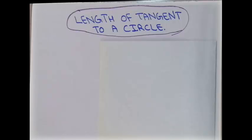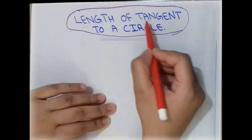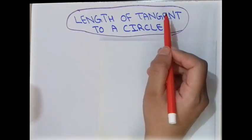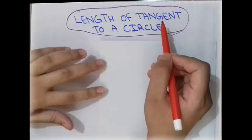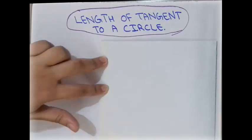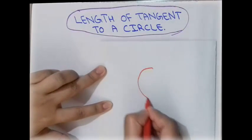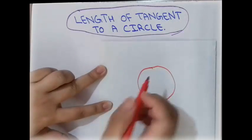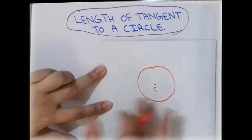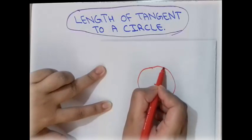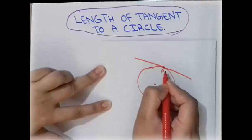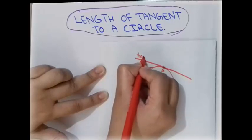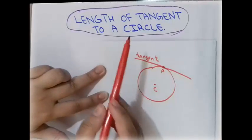In this lecture we will learn how to find the length of tangent to a circle. Before going to this topic we must know what a tangent is. We already discussed tangent and normal, and how to find the equation of tangent and normal in a previous lecture. A tangent is basically a line that touches a circle at only one point. For example, if we have a circle with a center, and a line touches the circle at only one point P, then that line is called a tangent.